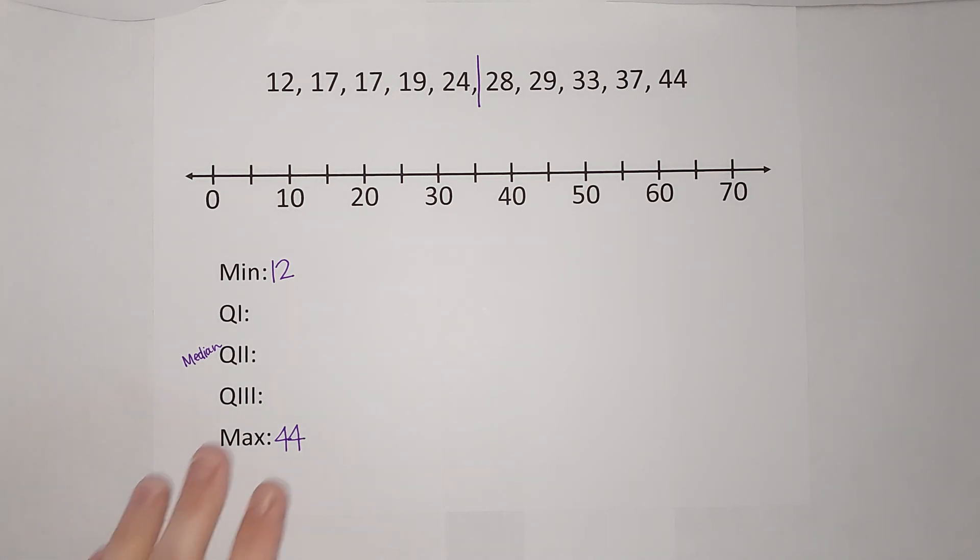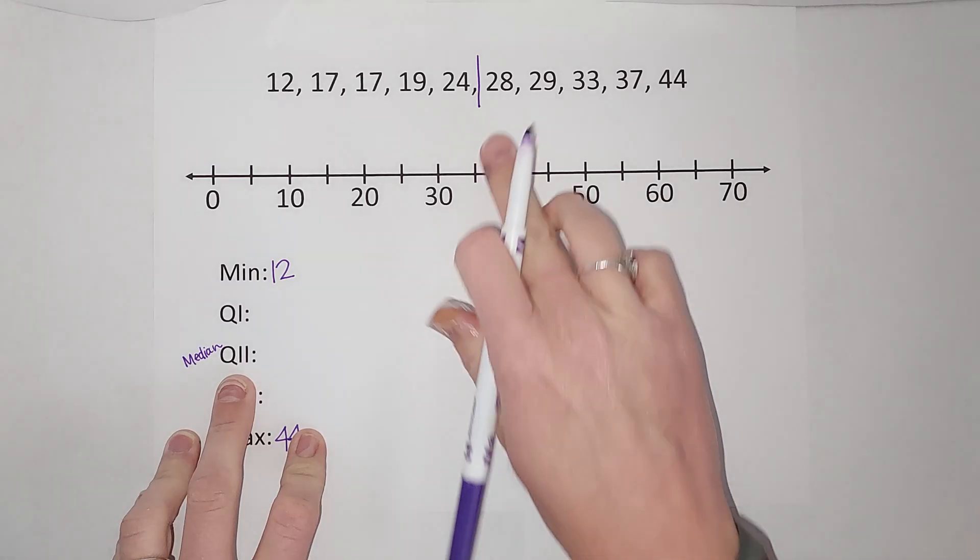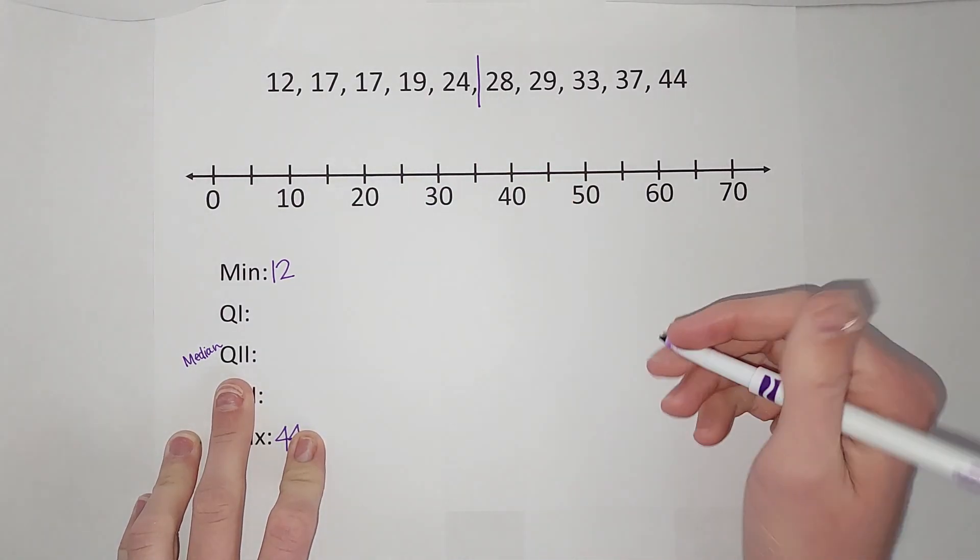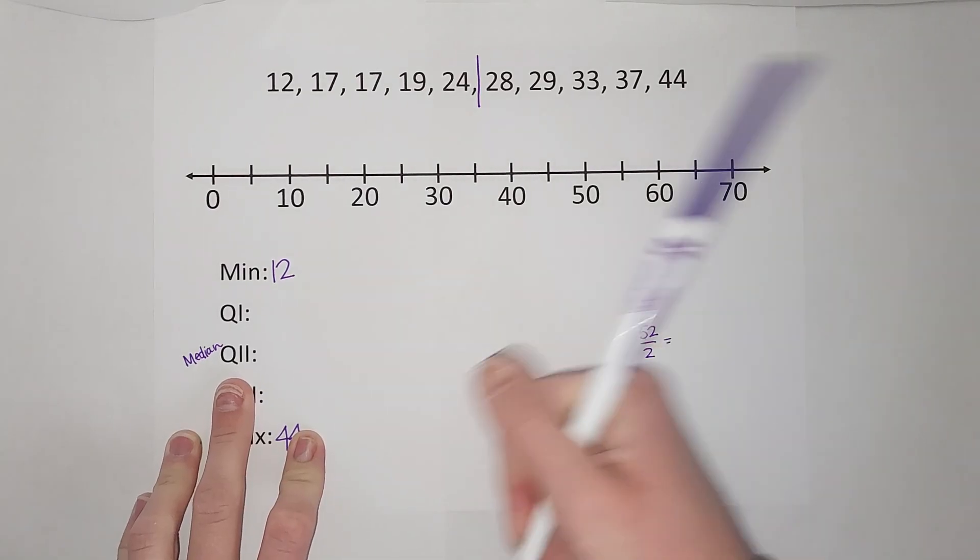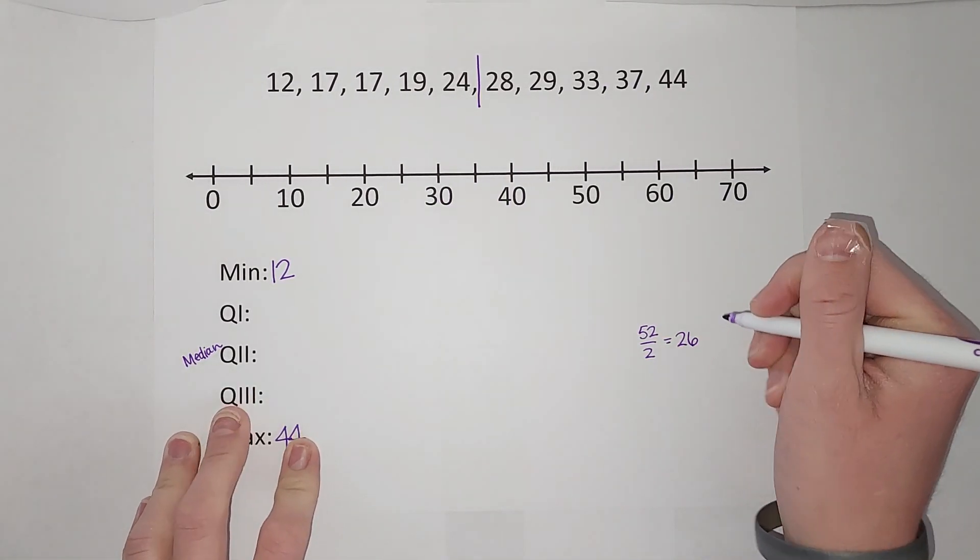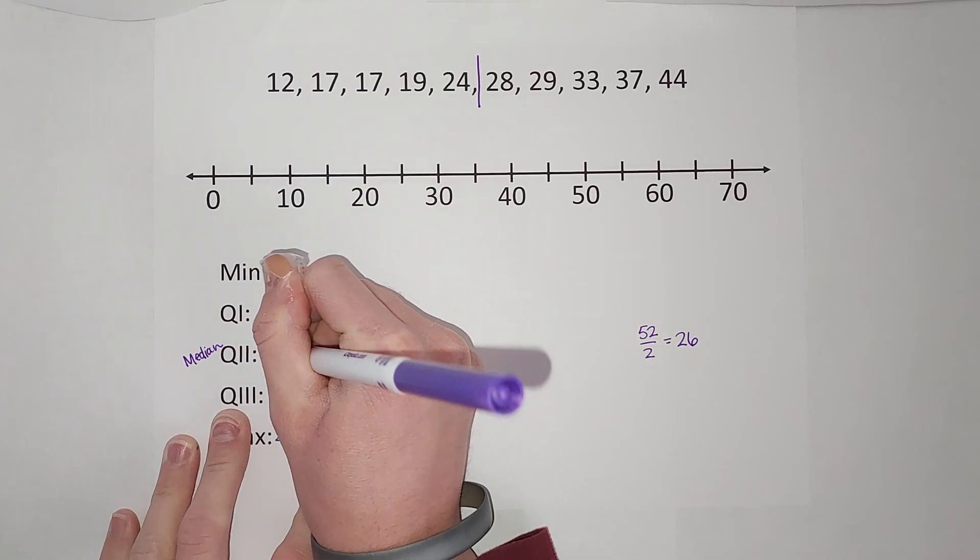To do that I'm going to add them together and divide by two. So when I add 28 and 24 I get 52, so it's going to be 52 divided by two. This is going to be the middle of these two numbers which gives me 26. So my median or my second quartile is 26.